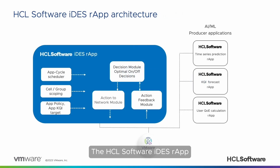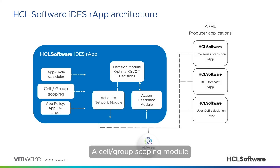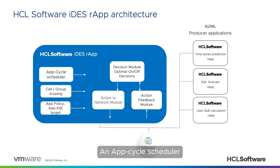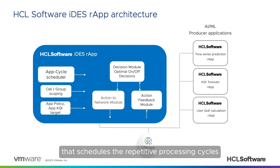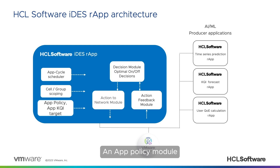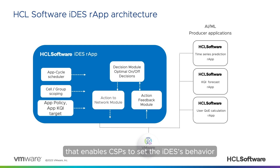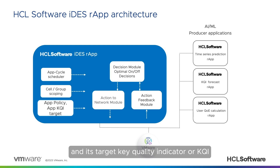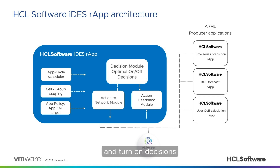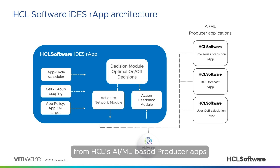The HCL Software IDES R-App is composed of the following modules: a cell group scoping module that determines which cell groups are addressed and in which order; an app cycle scheduler that schedules the repetitive processing cycles for specific cell groups; an app policy module that enables CSPs to set IDES's behavior and its target Key Quality Indicator, or KQI; and a decision module that makes optimal turn-off and turn-on decisions, based on prediction and forecast data from HCL's AIML-based producer apps.